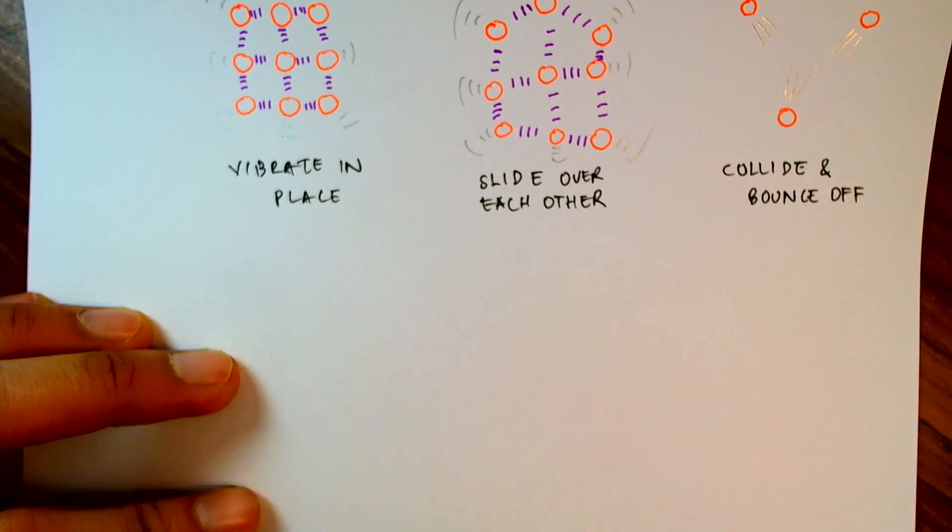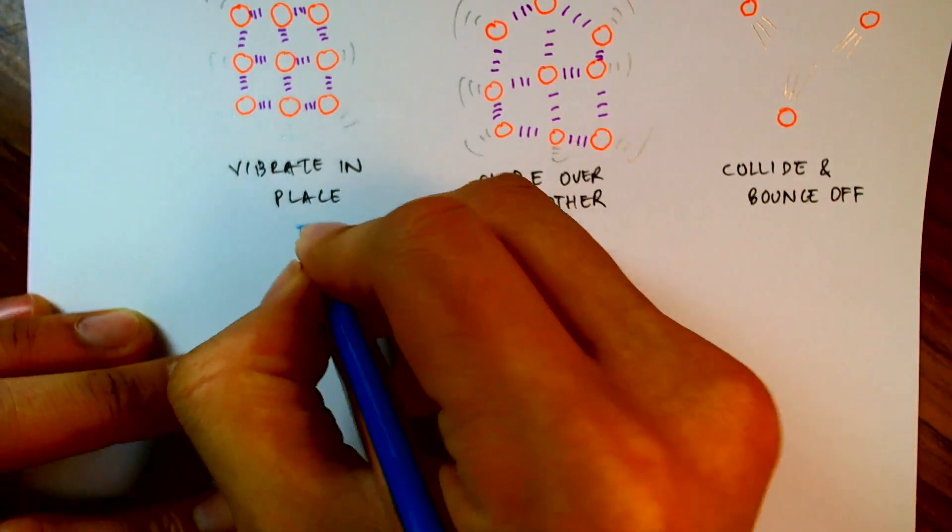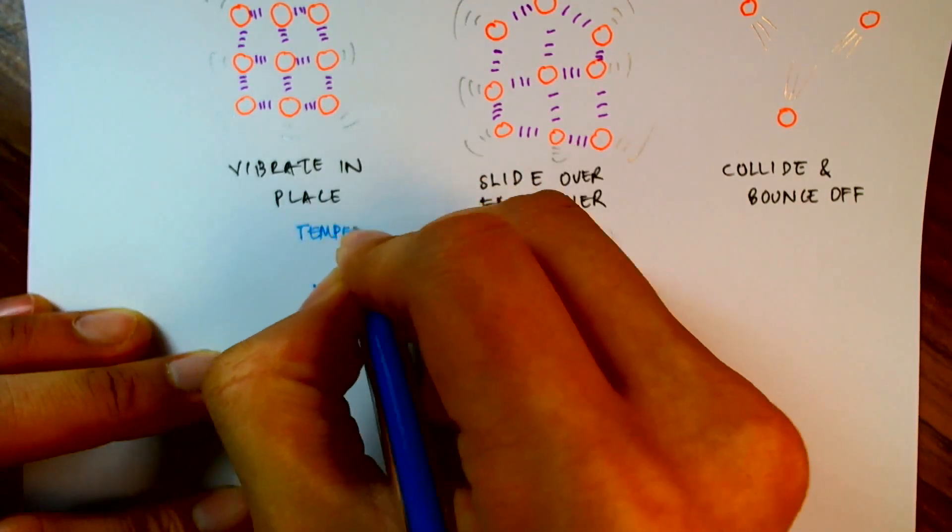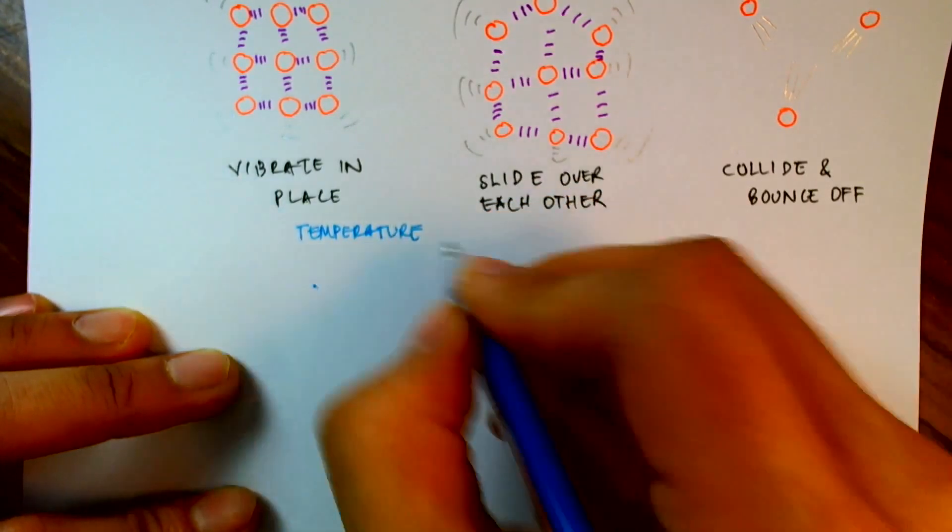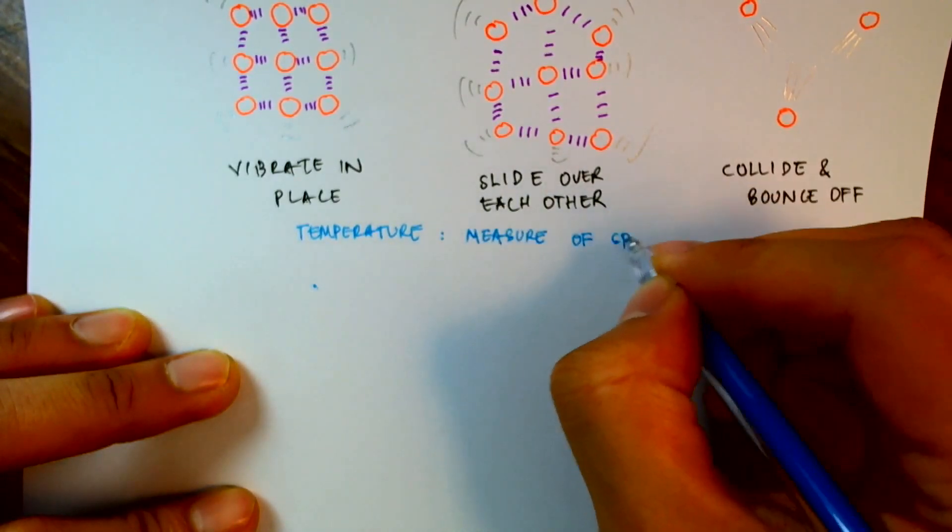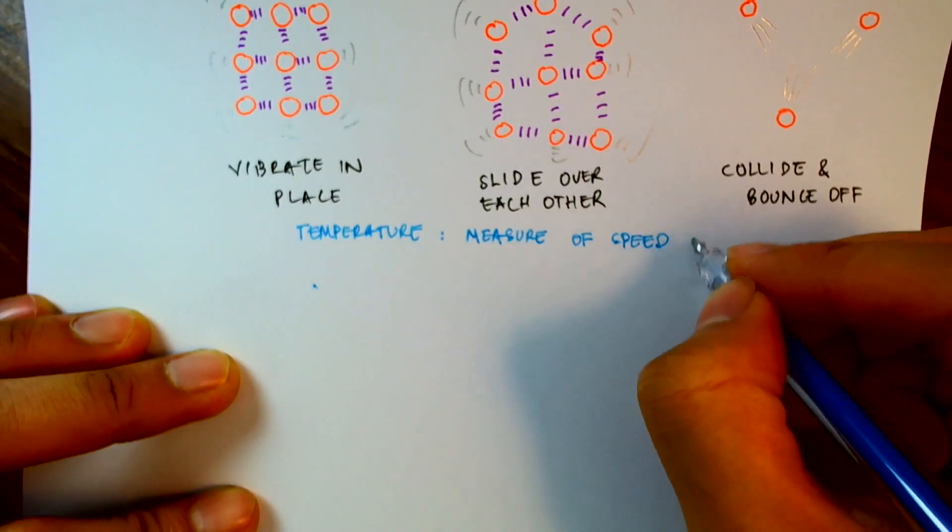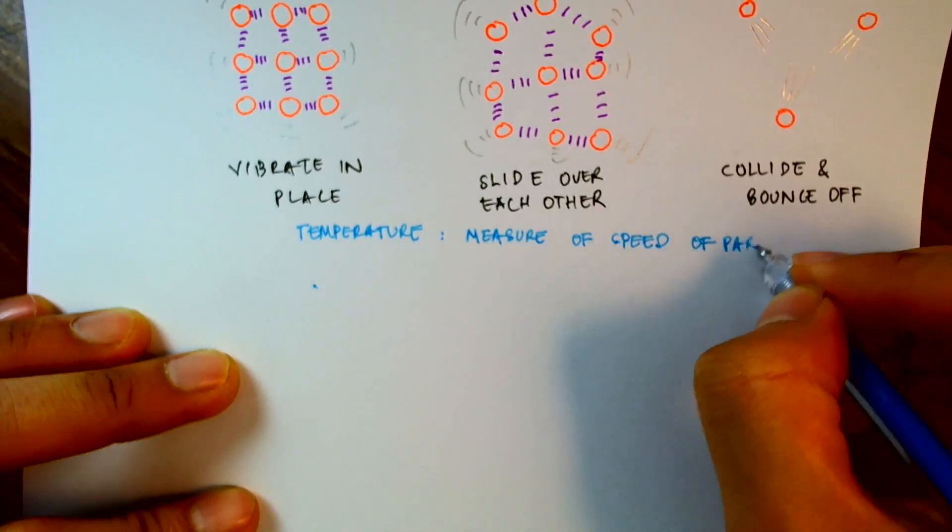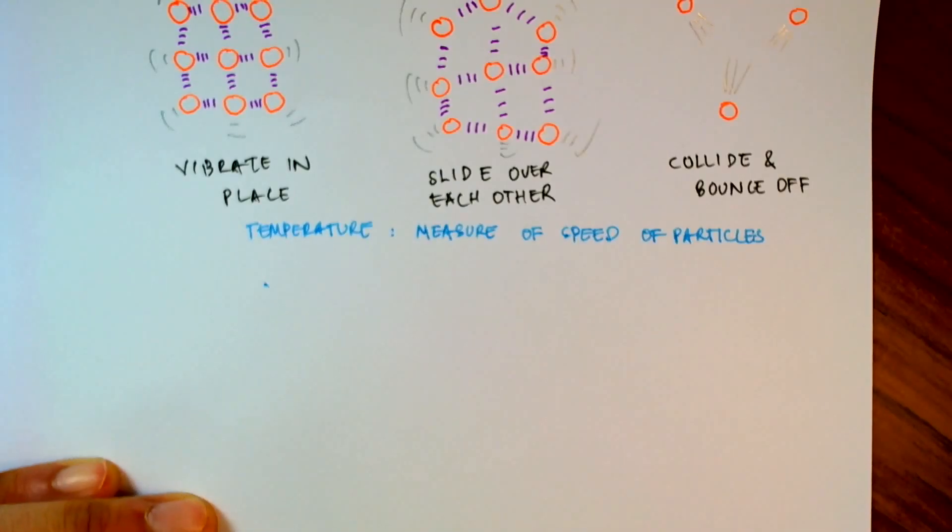It turns out that one way of defining temperature is based on a measure of the speeds of these particles. Now, this may be a new notion, but just hold that thought in your head for a moment as we investigate what happens when we heat an object to change its state.